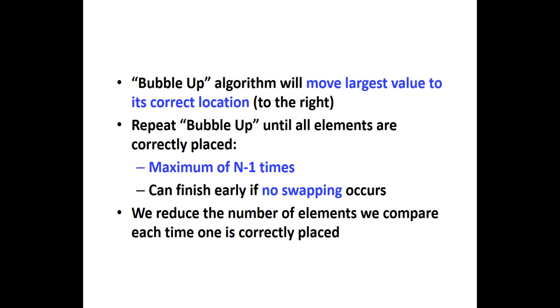To summarize: the bubble-up algorithm moves the largest value to its correct location each pass. For descending order, we target the smallest value instead. We repeat the bubble-up until all elements are correctly placed. A maximum of n-minus-one passes is required — and the algorithm can finish early if no swapping occurs in a final stage. Each pass reduces the number of elements to compare by one.